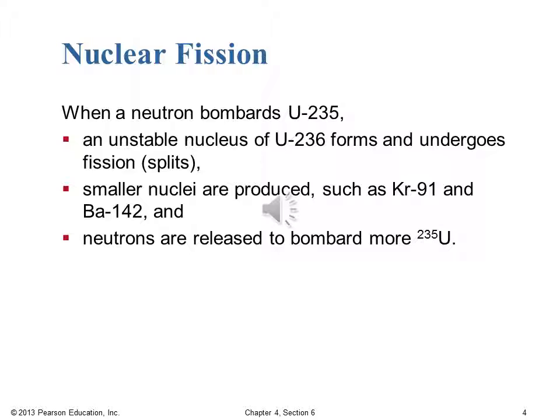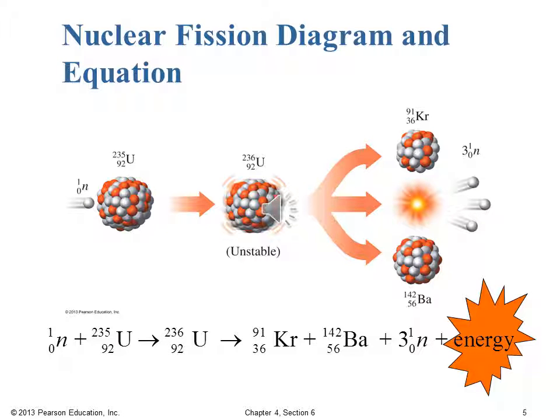If we have U-235 present and we bombard it with a neutron to get things started, we create additional neutrons that are going to react with additional U-235s in a chain reaction. This can either be done in a controlled manner in the case of a nuclear power plant — where we have boron-10 control rods that can absorb those neutrons and slow down the process — or, in the case of a nuclear weapon, the whole point is to have that uncontrolled chain reaction. We use U-235 because it's a fissile material, meaning a low-energy thermal neutron will cause this process, whereas U-238 would require a really high-energy neutron.